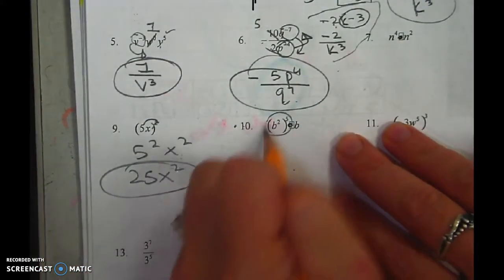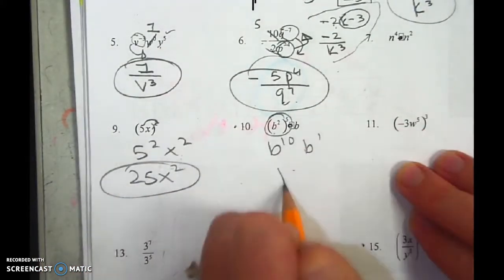In this case, I multiply because it's parentheses. There's 1b there. Now I have 11.